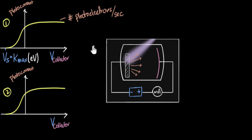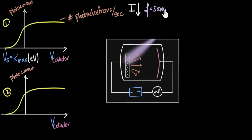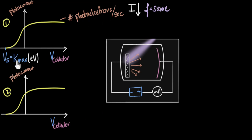Now what we'll do is change the intensity and the frequency. In the first case, I'm going to decrease the intensity of the light, but keep the frequency of the light the same. I want us to predict what the new graph is going to look like. We've already seen how intensity and frequency affect the number of photoelectrons and the maximum kinetic energy — all we have to do is translate that into drawing the new graph.